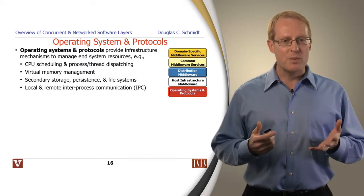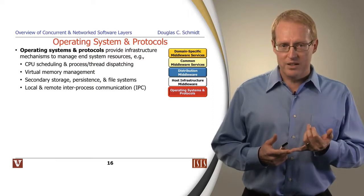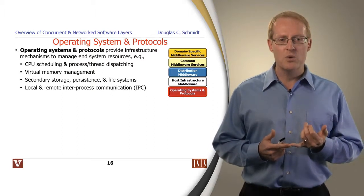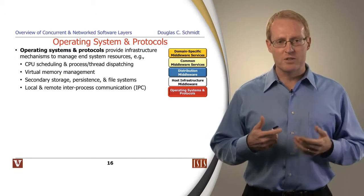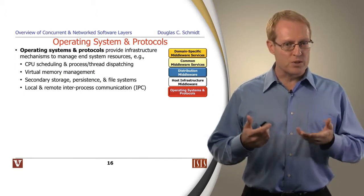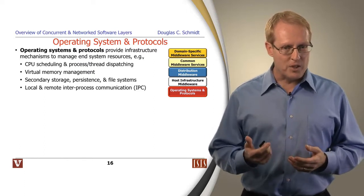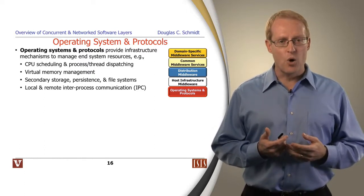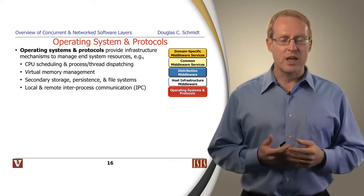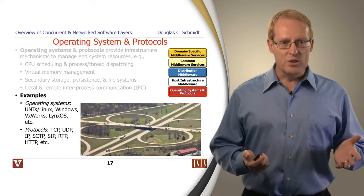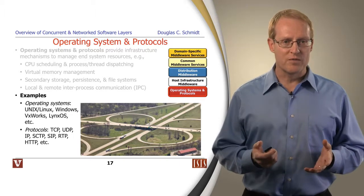If you think about an operating system, it's essentially a hardware abstraction layer — its purpose is to shield applications and higher-level services from the various low-level complexities and diversity of the hardware. An operating system typically does a number of things: it supports scheduling of threads over CPUs, manages virtual memory, provides various forms of storage, persistence, file systems, and supports a whole range of local and remote inter-process communication mechanisms.